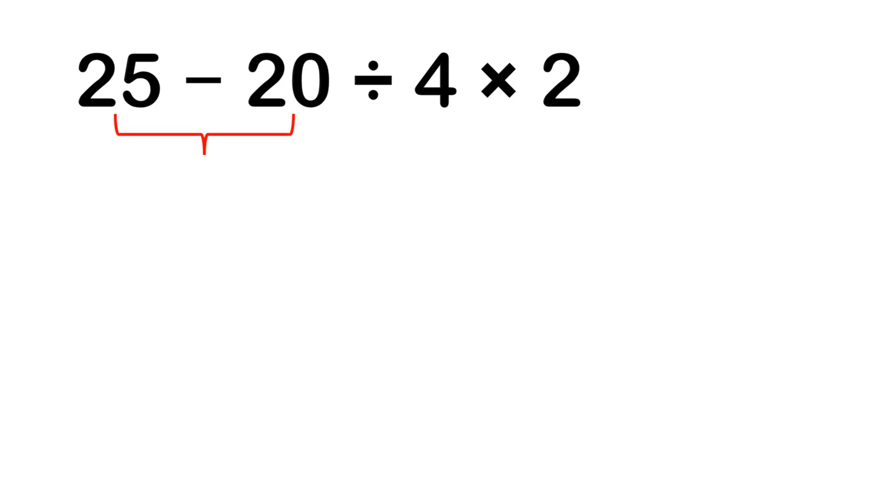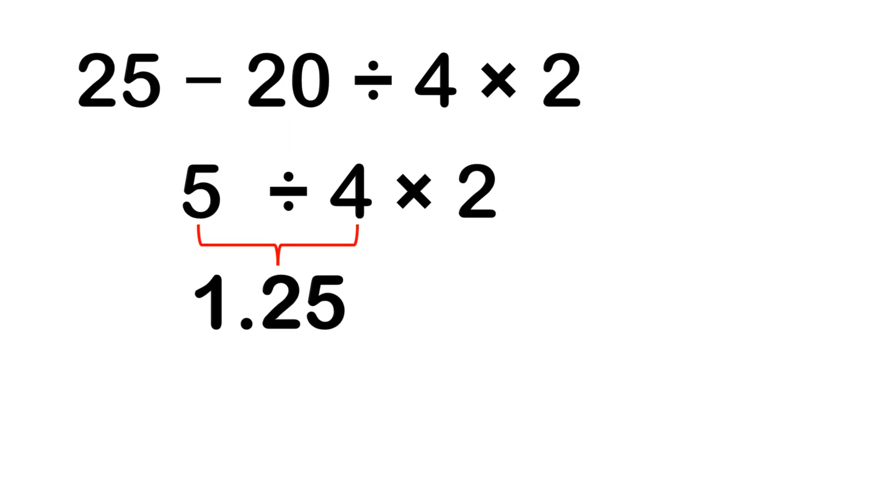25 minus 20 is 5. Then 5 divided by 4 is 1.25. 1.25 times 2 is 2.5. These answers are wrong, and it's all because of one simple rule.